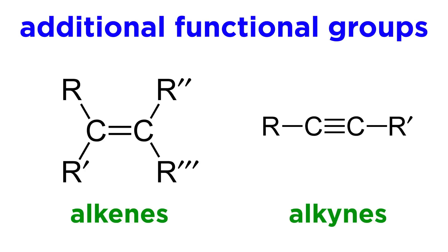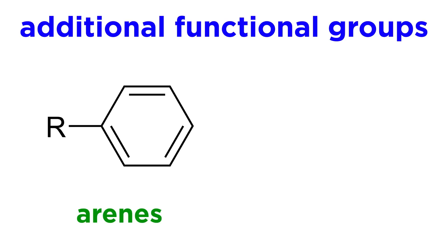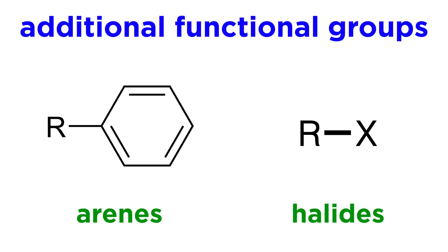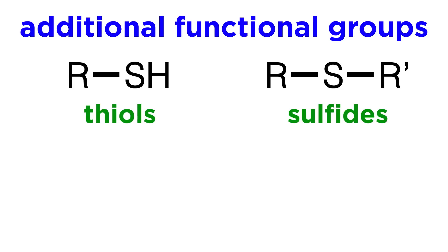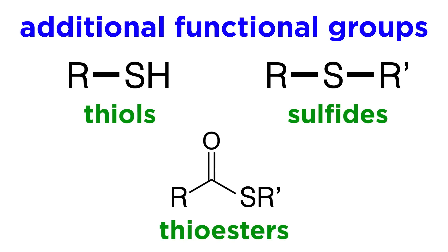Let's finish off with a few more rapid fire. Alkenes and alkynes have at least one carbon-carbon double bond and one carbon-carbon triple bond respectively. Arenes have an aromatic ring, such as benzene, which we will clarify as a concept later. Halides have a halogen atom. Thiols are the sulfur analog of hydroxyls, SH instead of OH. Sulfides are the sulfur analog of ethers, RSR instead of ROR. Thioesters are the sulfur analog of esters, with SR instead of OR. There are many other functional groups, but this will suffice as an introduction. We will see these and other functional groups many times as we learn organic chemistry, but for now just try and become as familiar with these basic ones as possible, as they are truly ubiquitous.